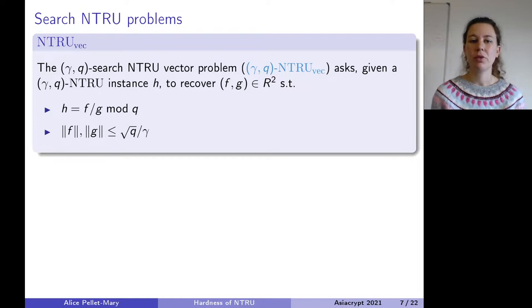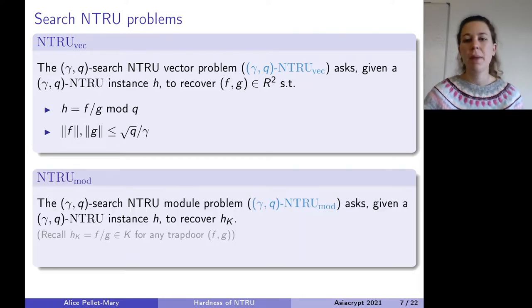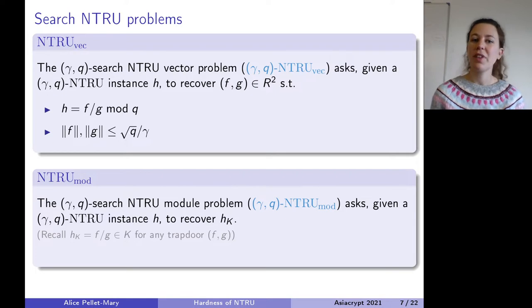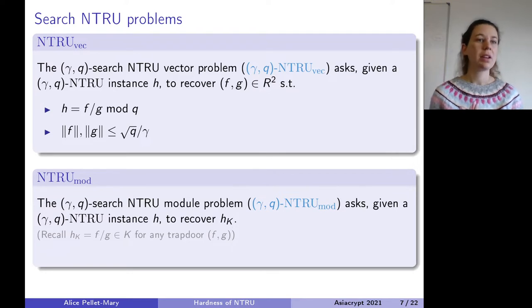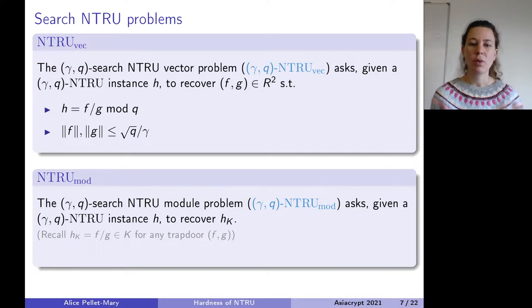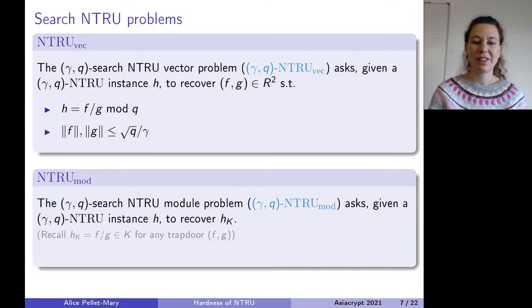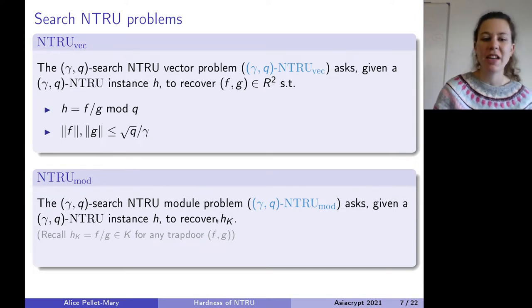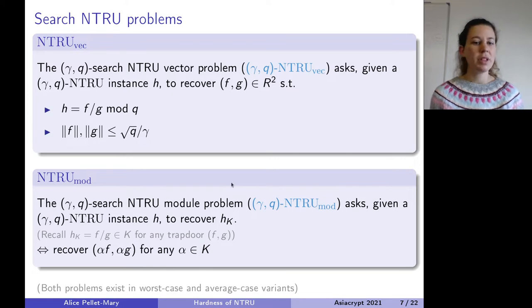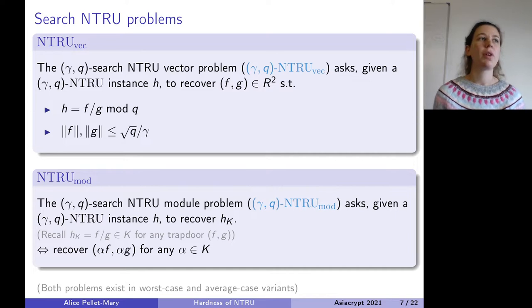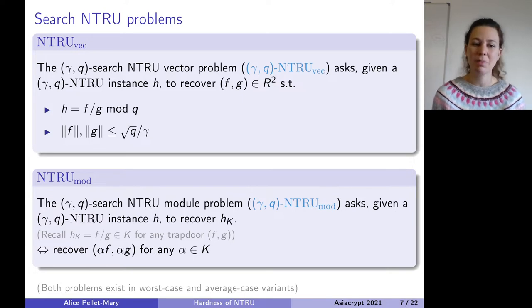The other variant also makes a lot of sense. The issue with the NTRU vector variant is that what you have to recover is not unique. So instead, maybe you don't care about recovering small F and G — you just care about recovering the lift of H in K, namely F divided by G in K, what I called H_K. I call this variant the NTRU module problem. The advantage is that the solution is unique: there is a unique H_K. Said differently, you don't necessarily need a small trapdoor, but any multiple alpha*F, alpha*G for any alpha — even very large — is acceptable.